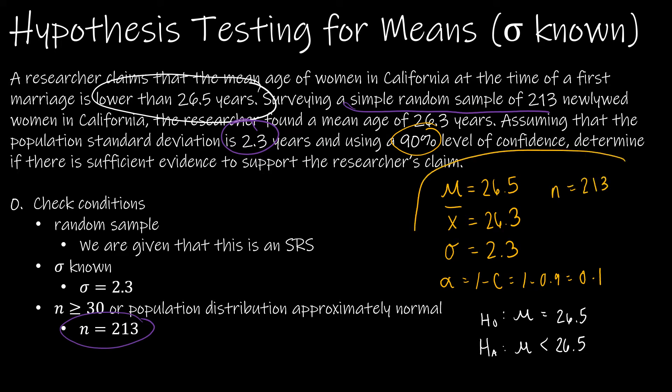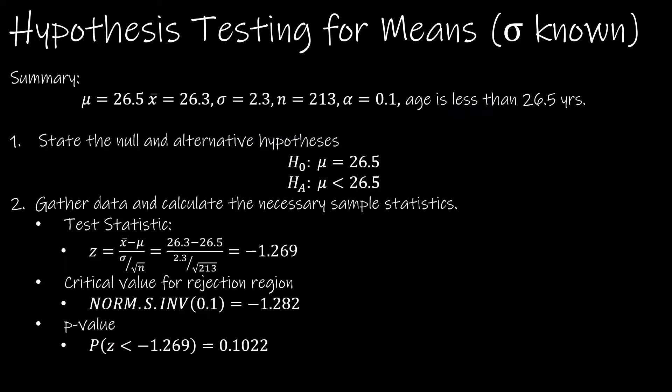Here's everything that I'm going to write as a summary on the next slide. I've copied the summary to the top of the page, and I've also included that the age is going to be less than 26.5 years. Basically, on the last slide, I already talked through the alternative and null hypotheses.